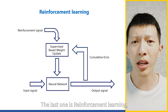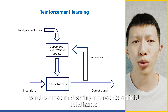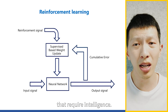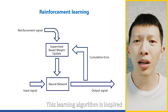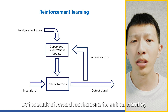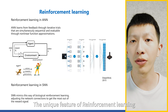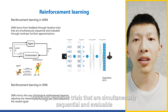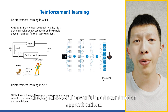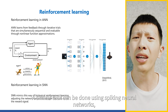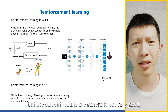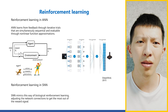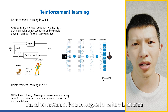The third is reinforcement learning — a machine learning approach to artificial intelligence that aims to create programs capable of solving problems requiring intelligence. This learning algorithm is inspired by the study of reward mechanisms in animal learning. The unique feature of reinforcement learning based on artificial neural networks is that it learns from feedback through iterative trials that are simultaneous, sequential, and invaluable, using powerful nonlinear function approximations. A similar approach can be done using spiking neural networks, but current results are generally not very good, and how to learn efficiently based on reward mechanisms like biological creatures remains an area needing improvement.